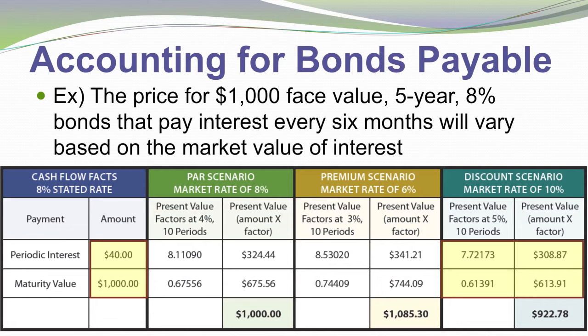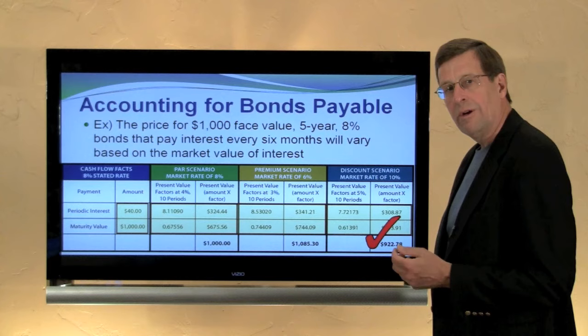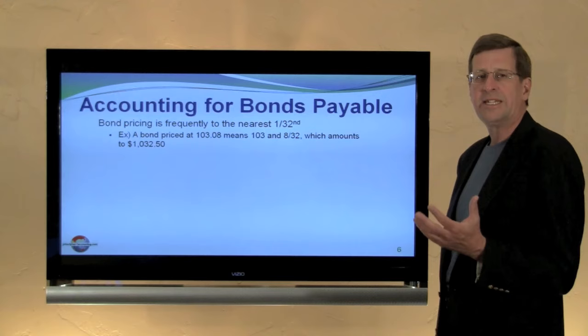Lastly, when the market rate of interest is 10%, the 8% bonds are not looking so good. Recalculating the present value of the payments using a 5%, 10-period annuity along with the present value of the principal gives a valuation of $922.78 for that bond. That's simply how the market prices bonds when the market rate differs from the stated rate.